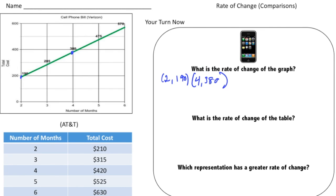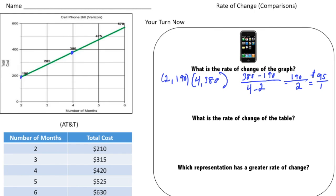The second point has an X value of 4 and a Y value of 380, so (4, 380). To find the rate of change it's the change in Y over the change in X: 380 minus 190 over 4 minus 2, which gives us 190 over 2. The unit rate is 190 divided by 2, which is 95. So the unit rate for Verizon is $95 per month.